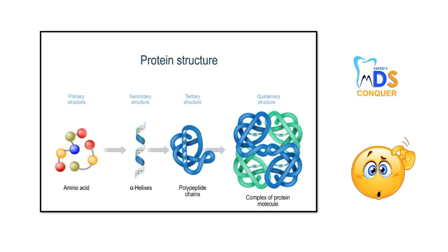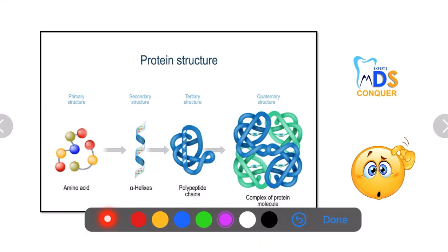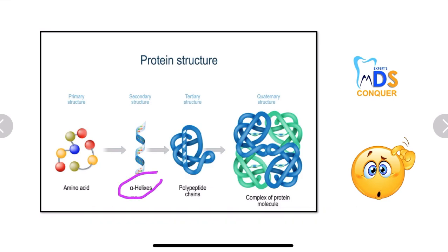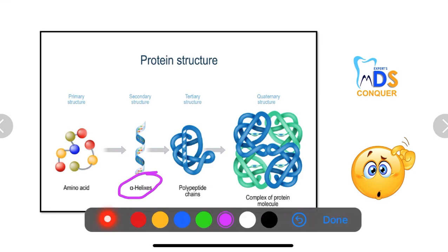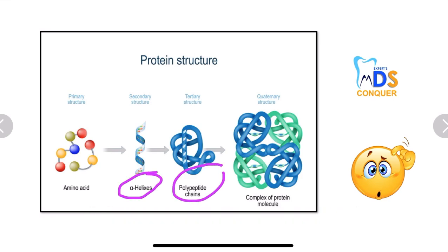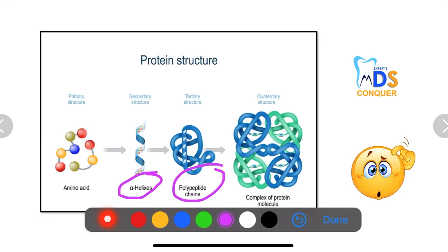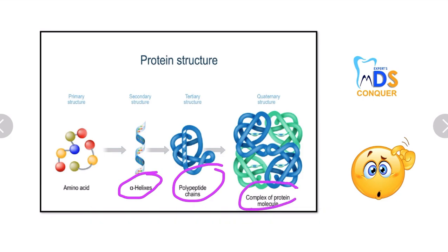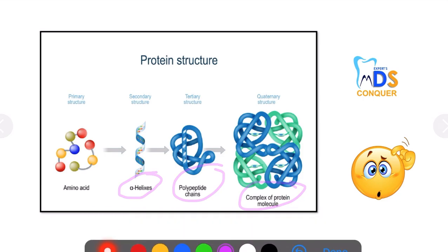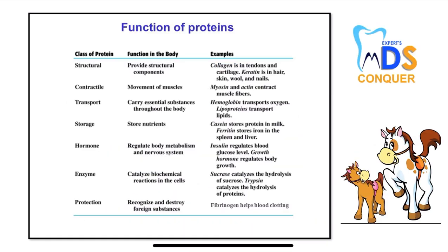Coming to the protein structure: what is primary, what is secondary, what is tertiary, and what is quaternary. Secondary is like a helix, and chains of polypeptide chains are with tertiary, and the complex of the protein molecule is with quaternary.